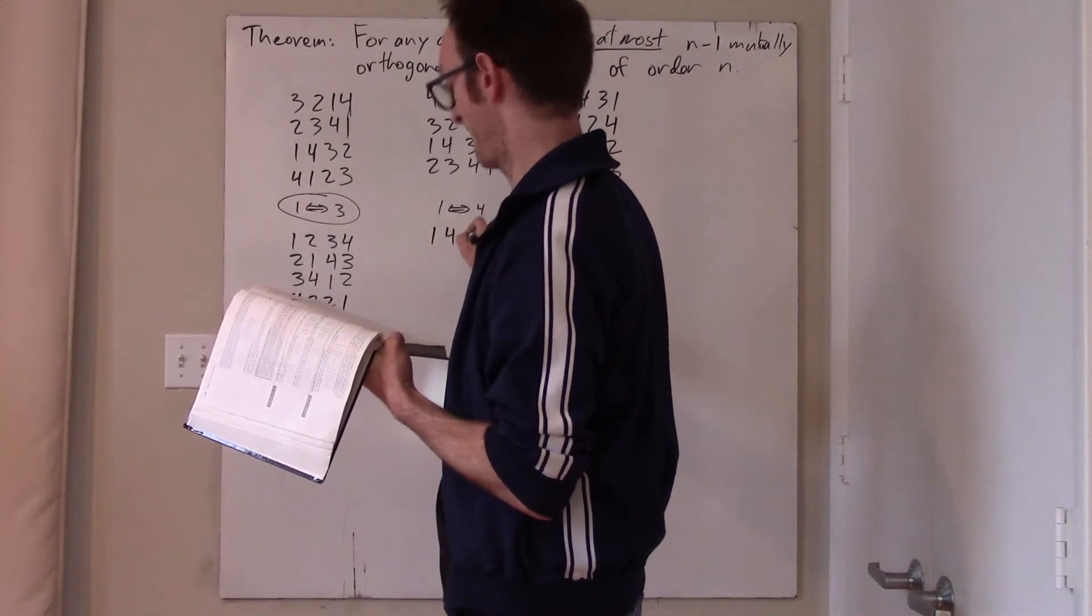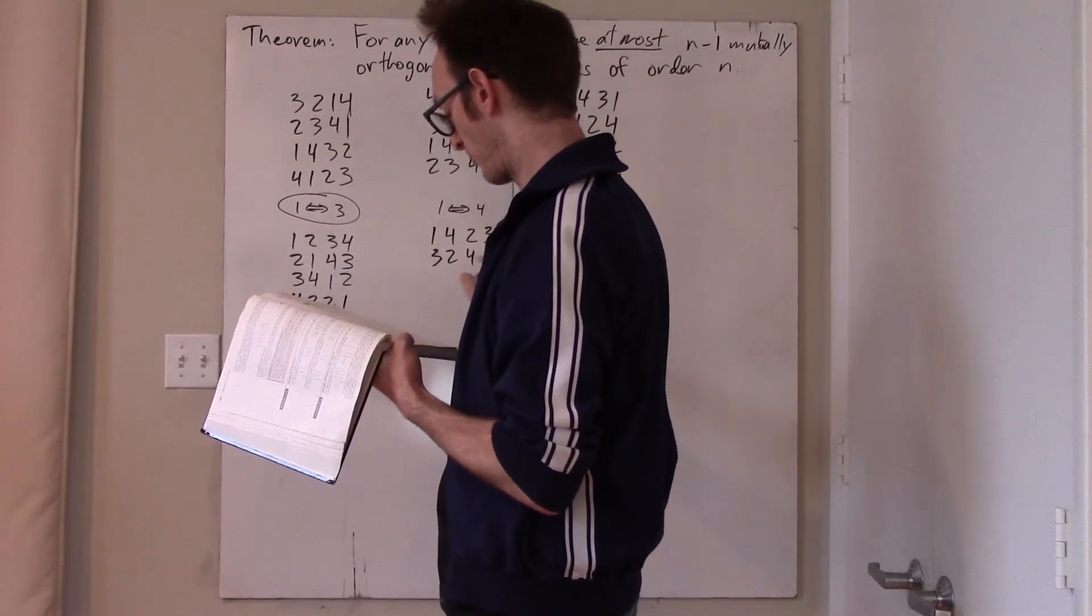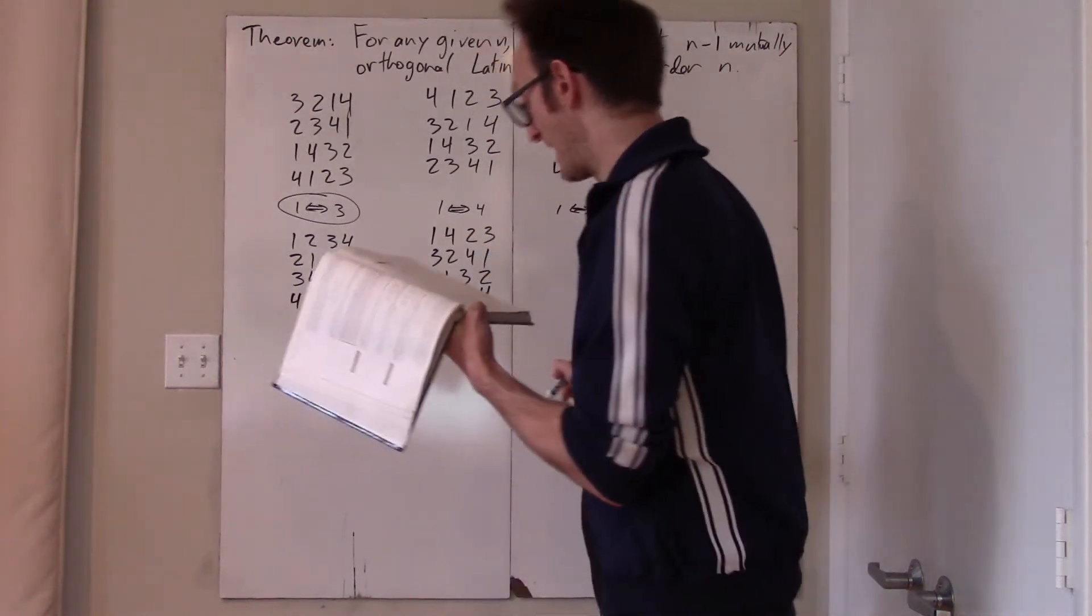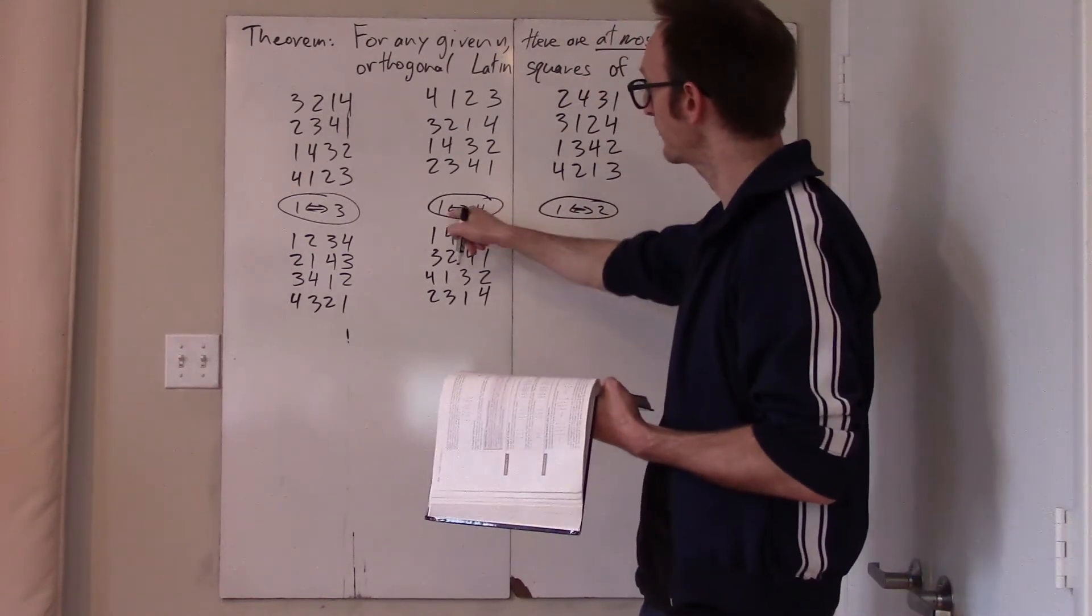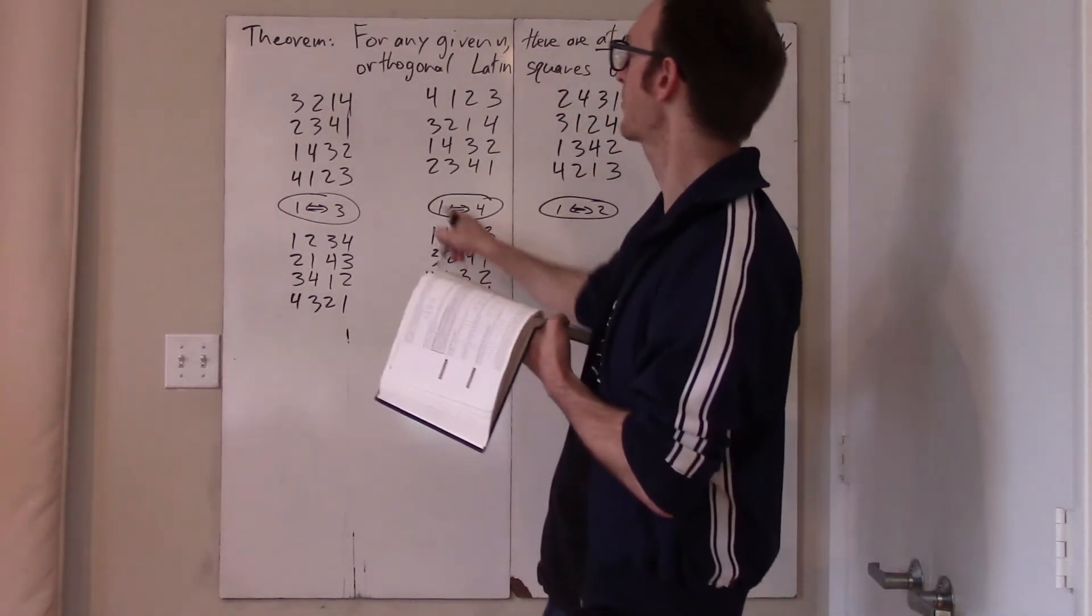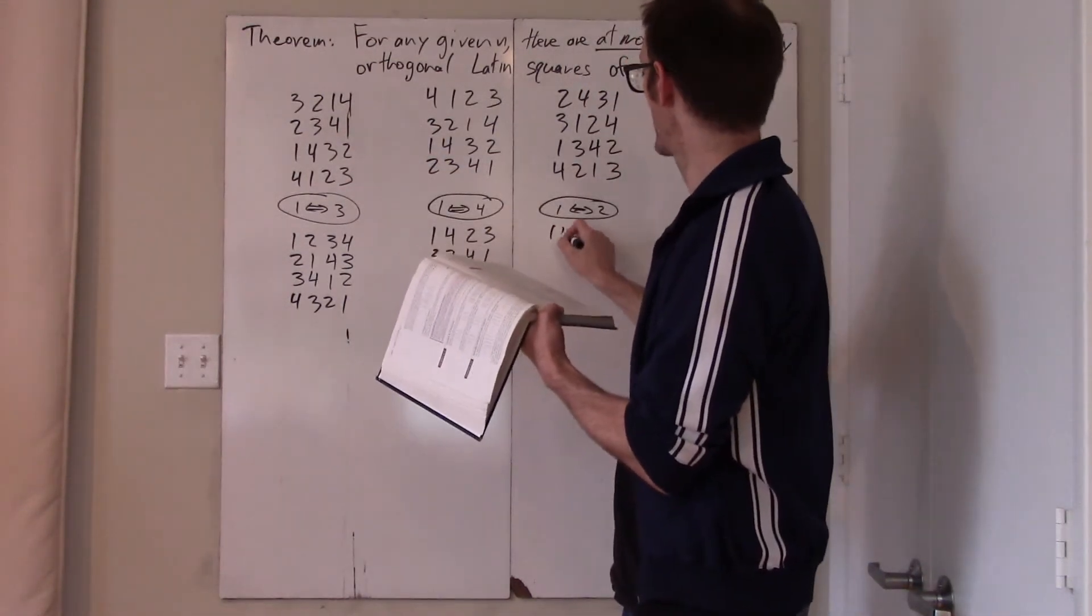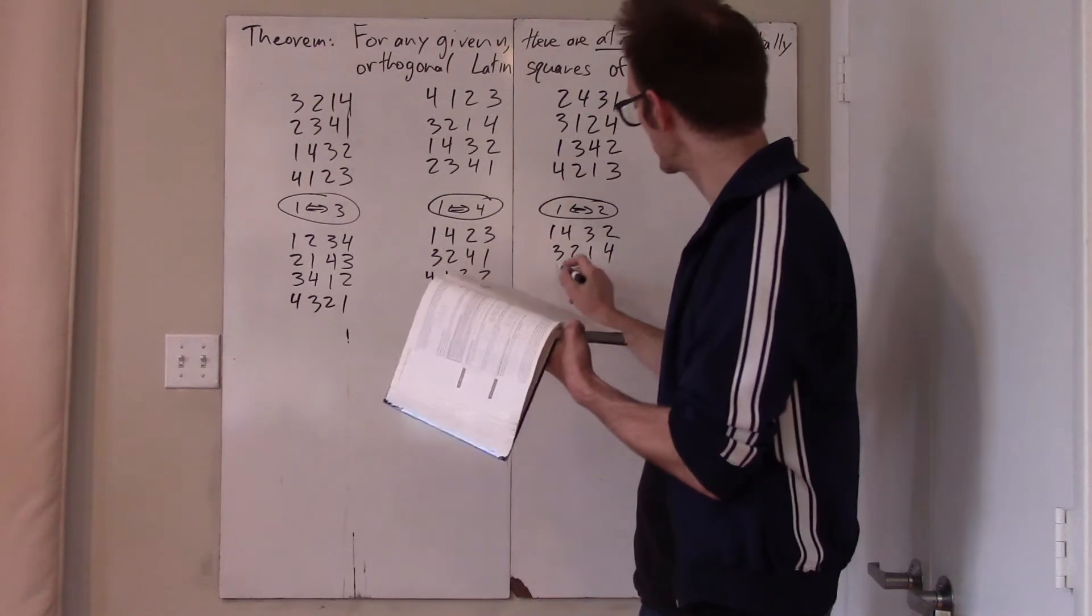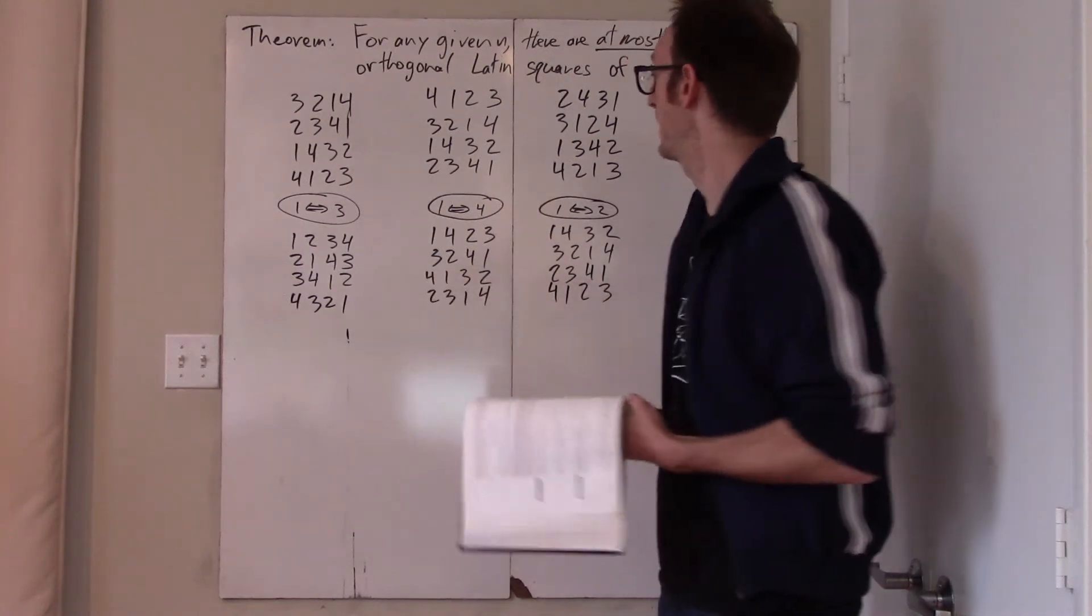And this is now going to be 1, 4, 2, 3 and 3, 2, 4, 1. 4, 1, 3, 2, and 2, 3, 1, 4. Okay. And in each case, by performing this sort of substitution of one number for another, then we get a new Latin square, but it preserves the orthogonality with any of the previous Latin squares. And so, after step one of this process, this is exactly what Gossett says. This is not particularly a better explanation, but if you don't like to read.